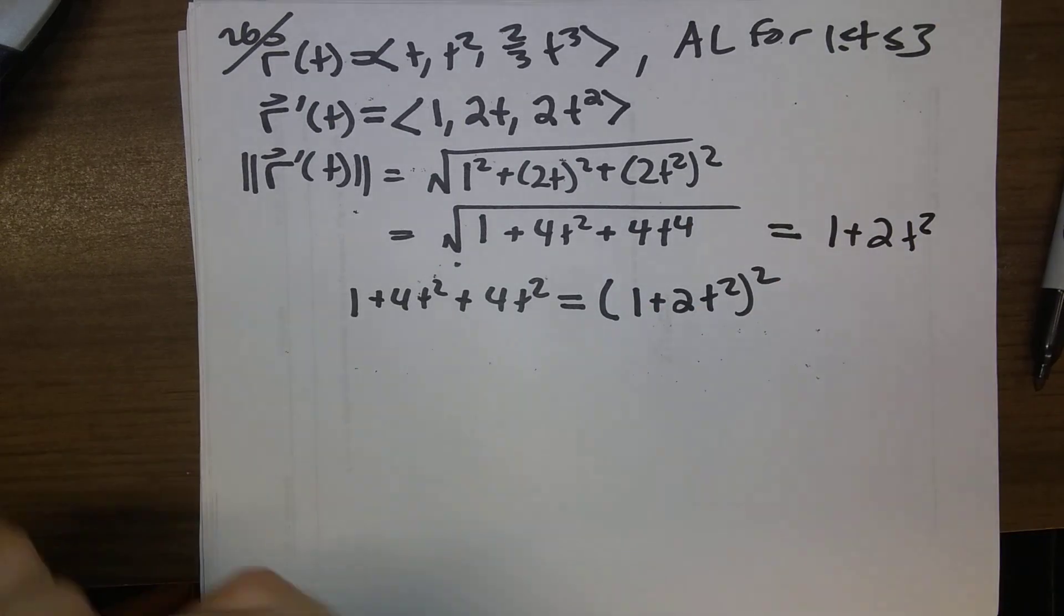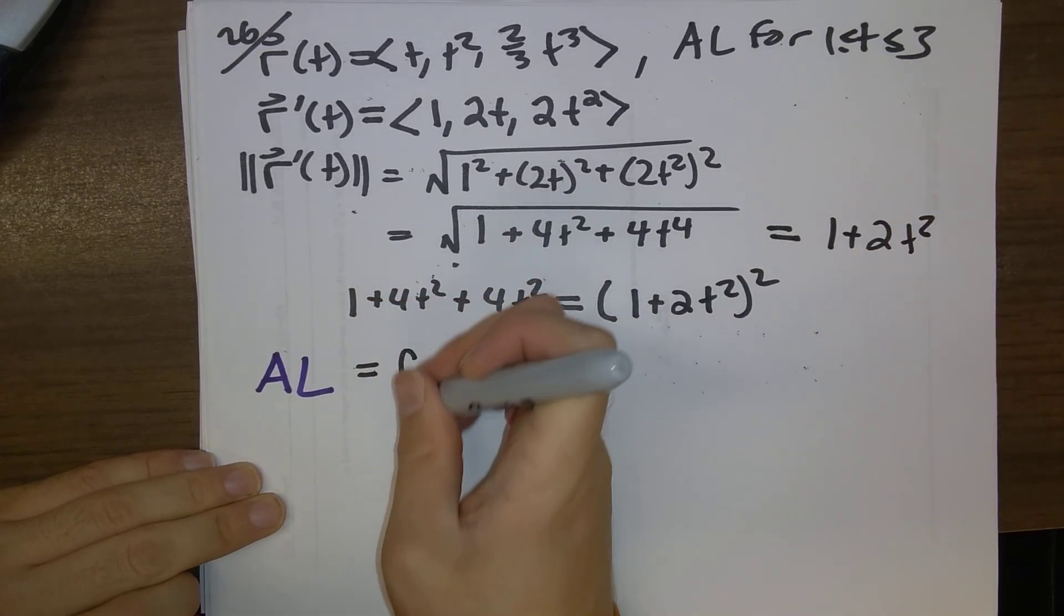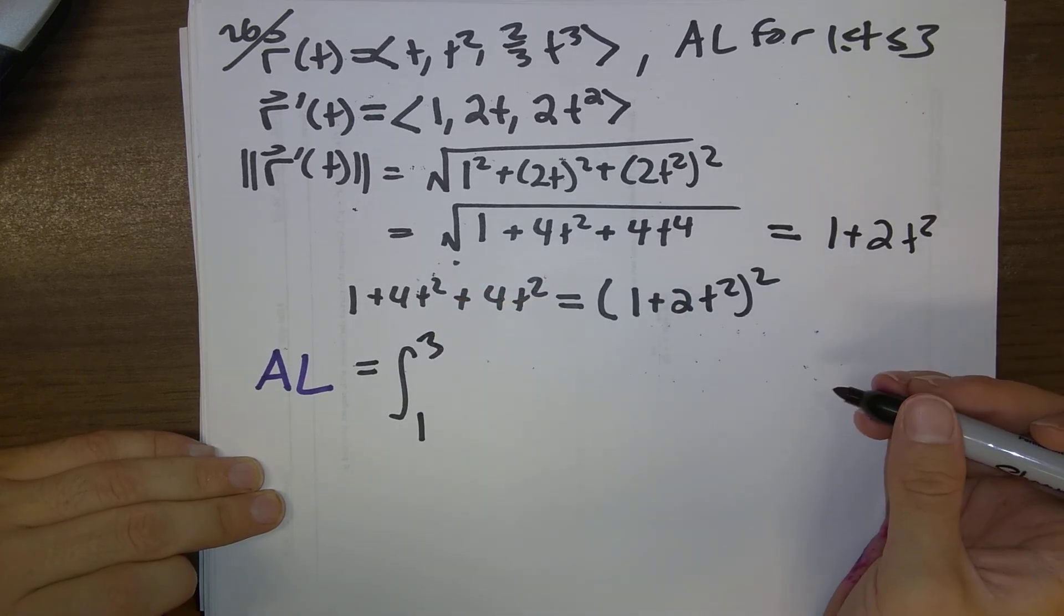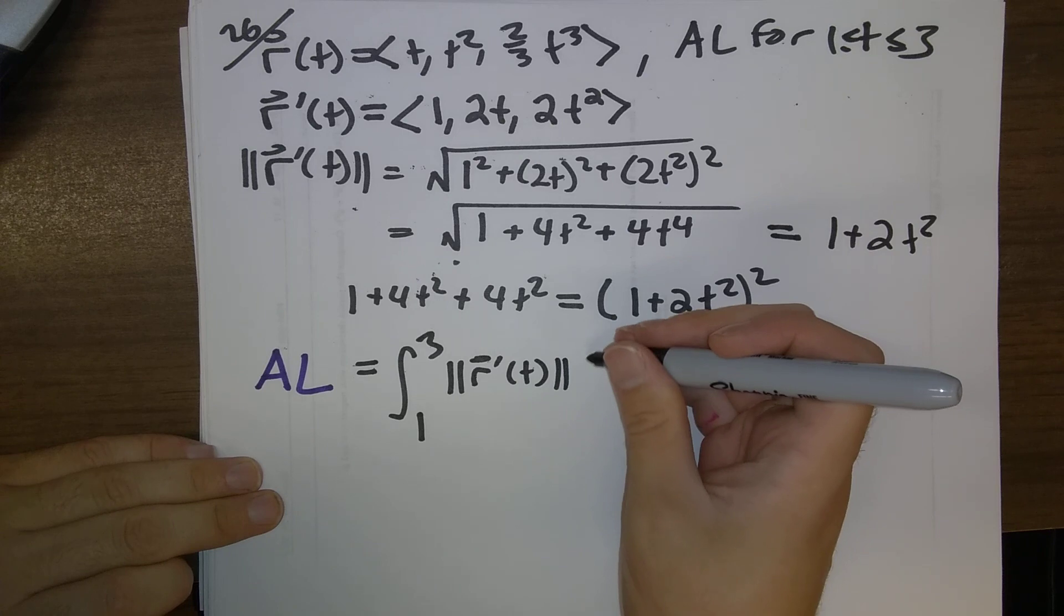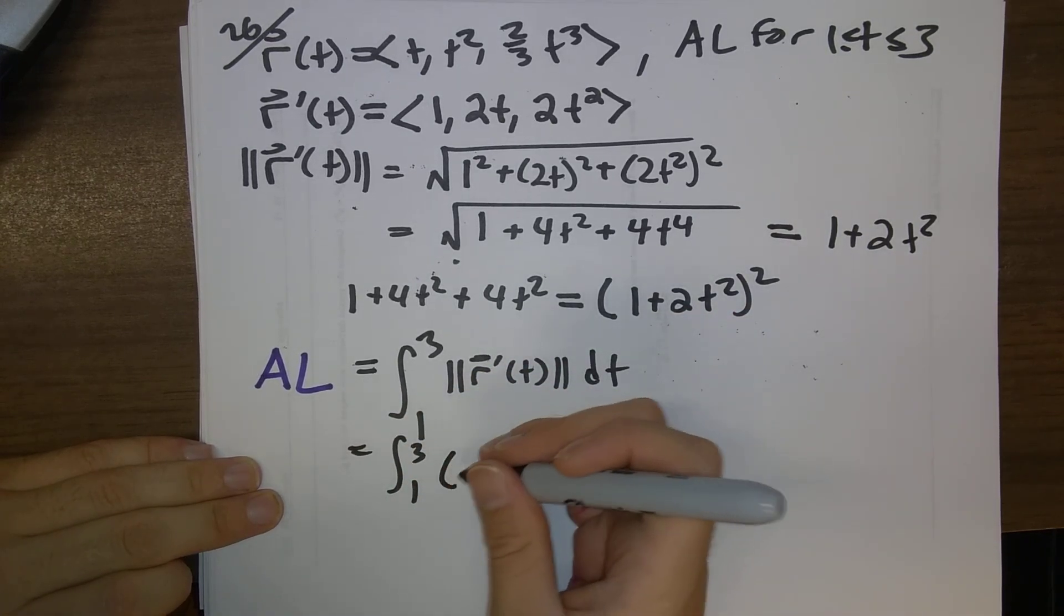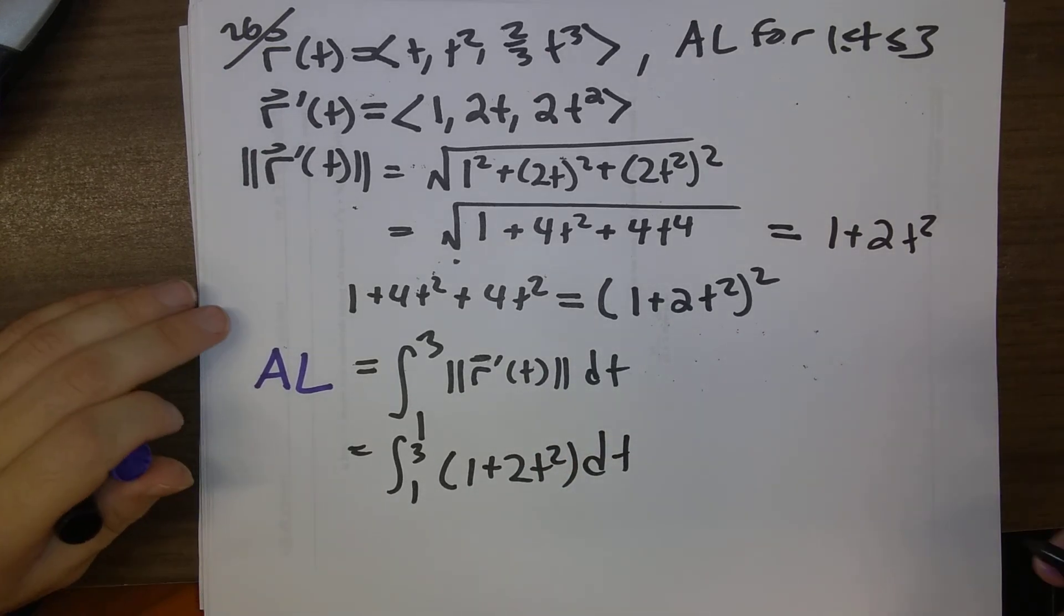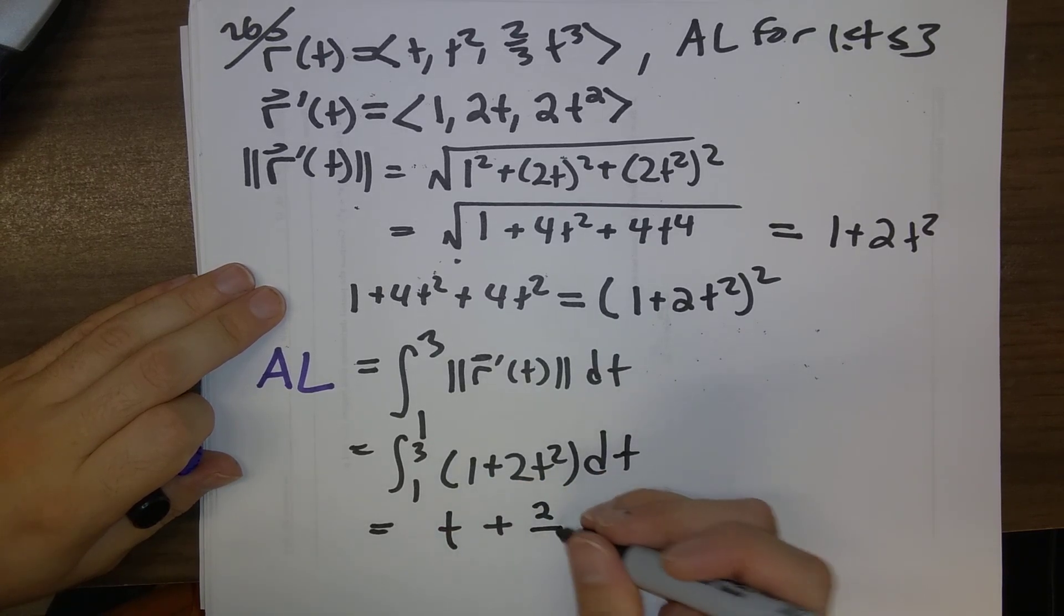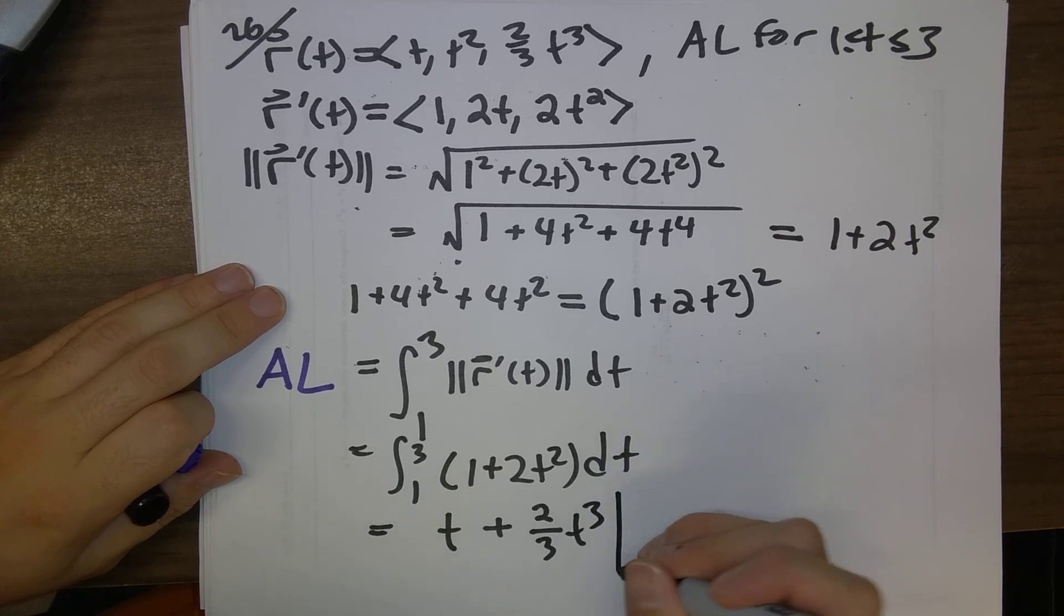At this point, we are finally ready to write down our formula for the arc length. The integral of t runs between 1 and 3 of the speed, dt. We just found out that 1 plus 2t squared is the function that we're integrating, our integrand. So, t plus the integral of 2t squared is 2 thirds t cubed.